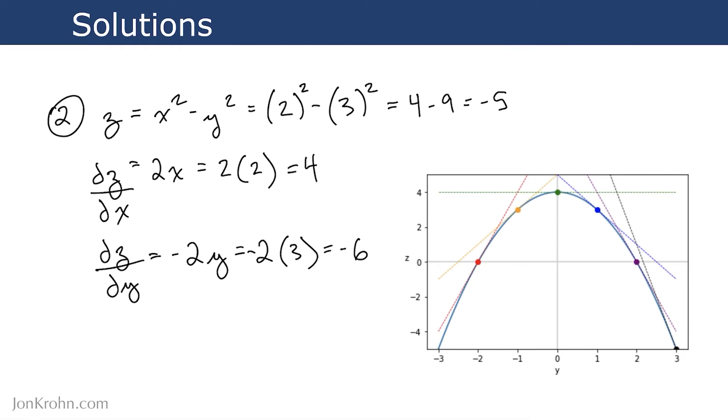For exercise 2, z is equal to negative 5, where x is equal to 2 and y is equal to 3. Our slope of z with respect to x is 4, and our slope of z with respect to y is negative 6. Again, like we had in the code, I've created a new chart here with that extra point that we just calculated here. So this is where y is equal to 3, x is equal to 2. That just corresponds to the particular slice that we're looking at of the curve here.